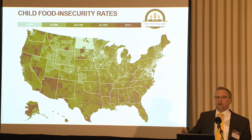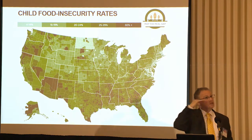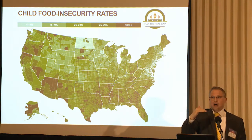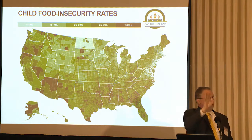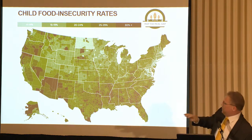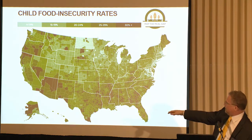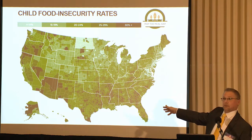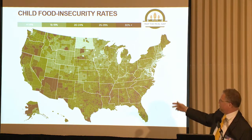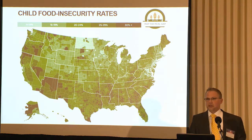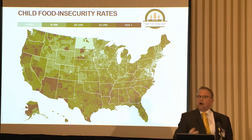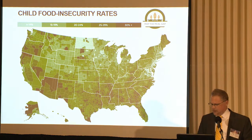The next slide gives the child food insecurity rates. Food insecurity rates amongst households with children are substantially higher than for overall households. One thing you'll notice is that in the bottom part of the map, around the Rio Bravo, some counties have food insecurity rates of over 40%. For example, Zavala County, right down there, has over 40%. This gives you another sense of the real dimensions of the food insecurity problem in the United States.